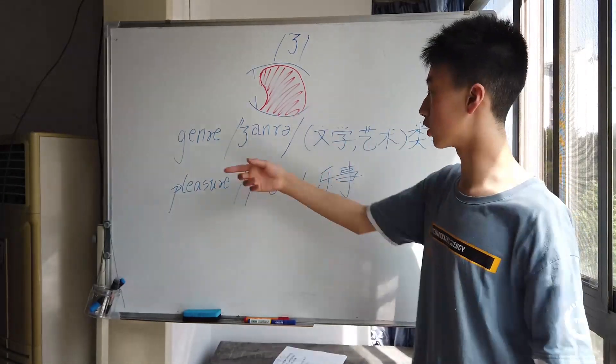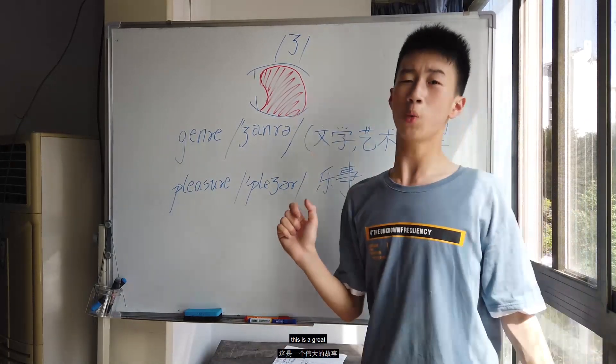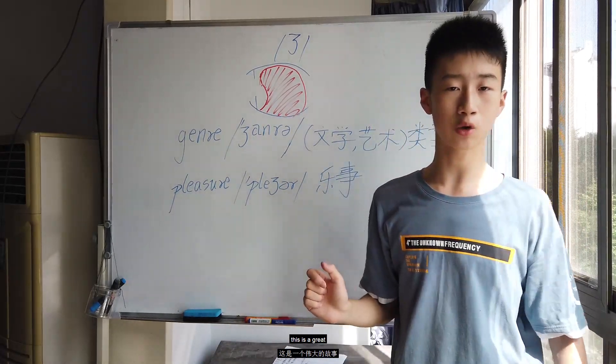Okay, let's look at some example words. Genre, which means 文学艺术的类型. What genre of music is this? This is a great movie genre.